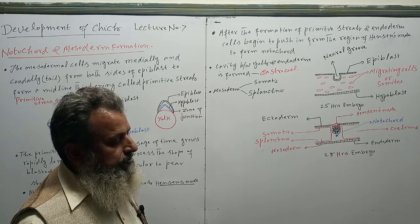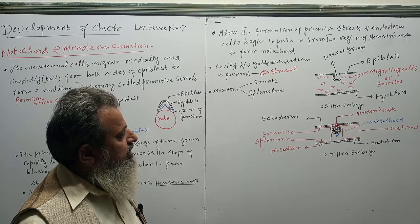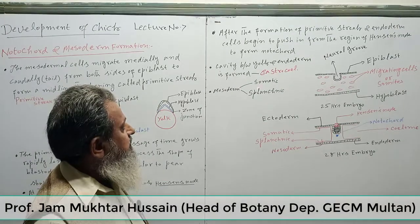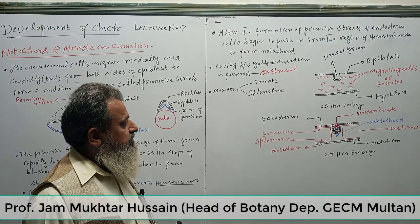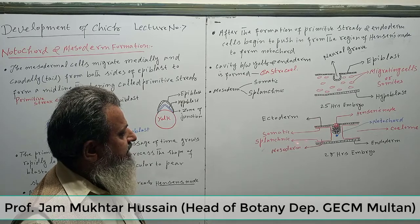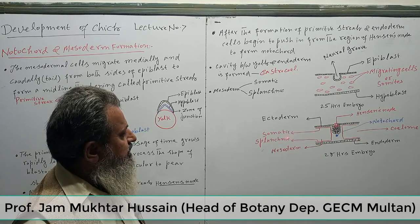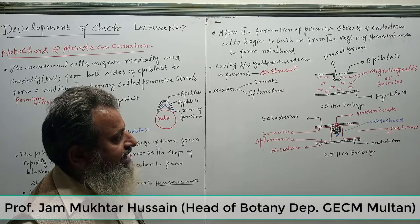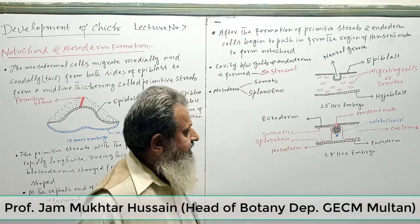The endoderm is formed, and the cavity known as the gastrocoel develops. Later, the mesoderm splits into two layers: one is the somatic mesoderm and the other is the splanchnic mesoderm. Somatic mesoderm underlies the ectoderm, and splanchnic mesoderm underlies the endoderm. Between the somatic and splanchnic mesoderm, a cavity is formed known as the coelom. These are coelom cavities and the organisms are called coelomates.